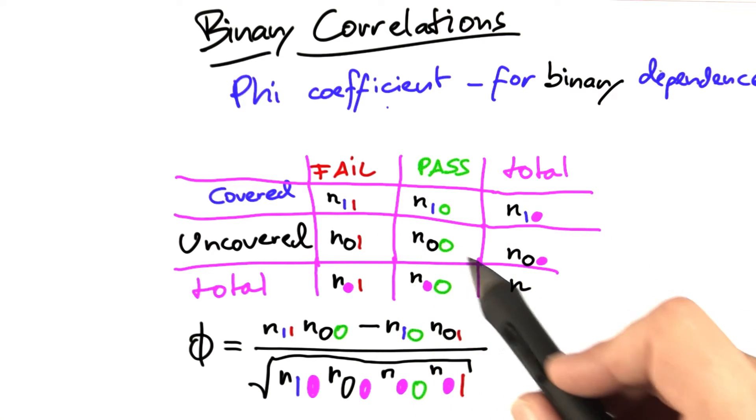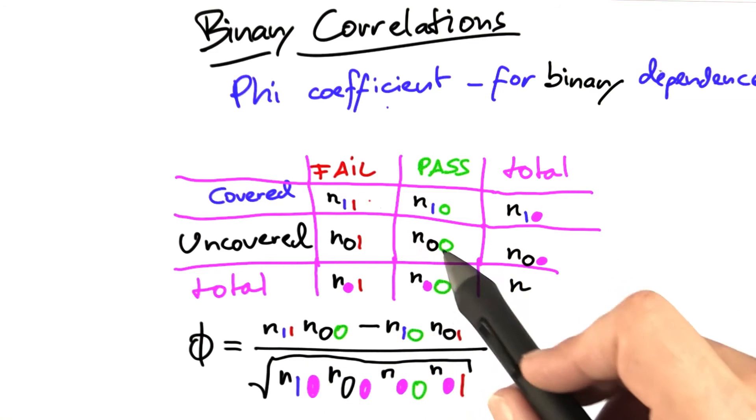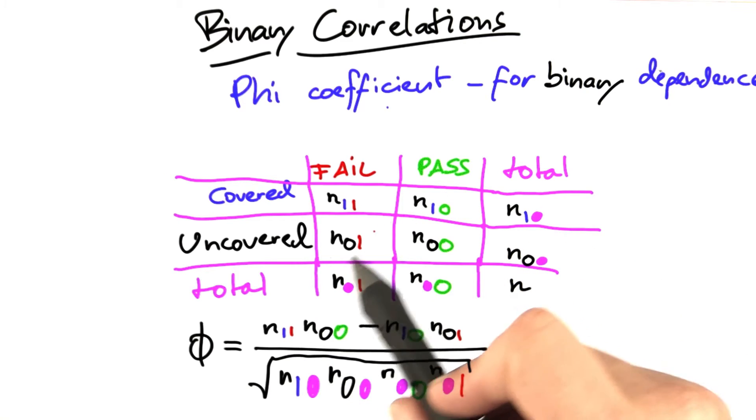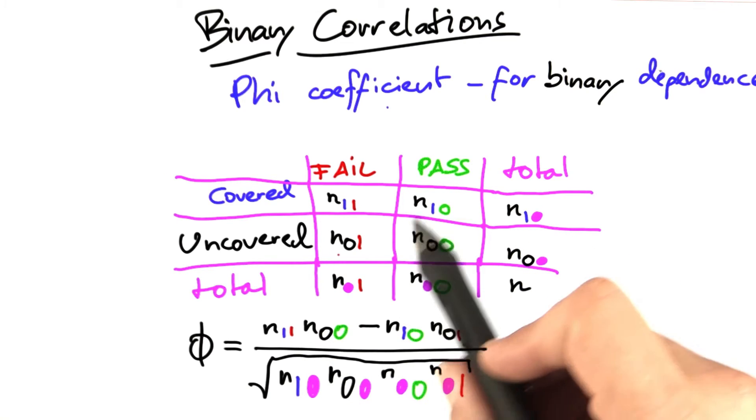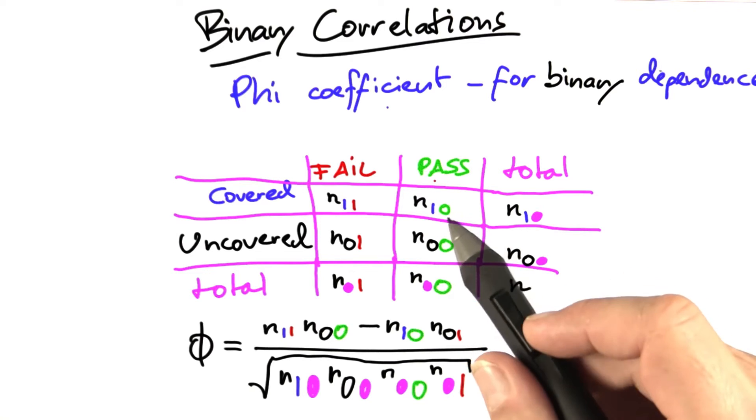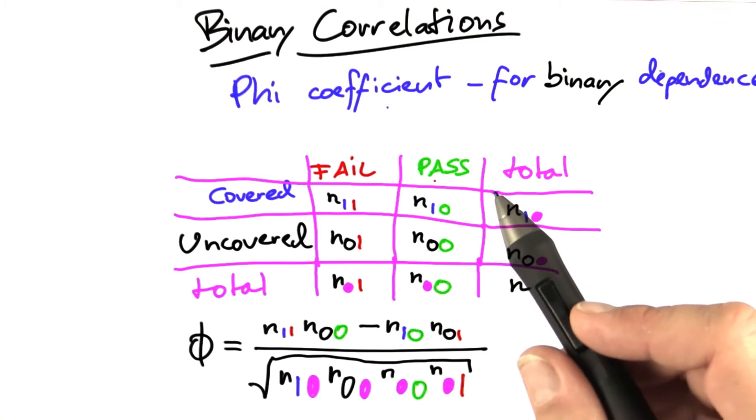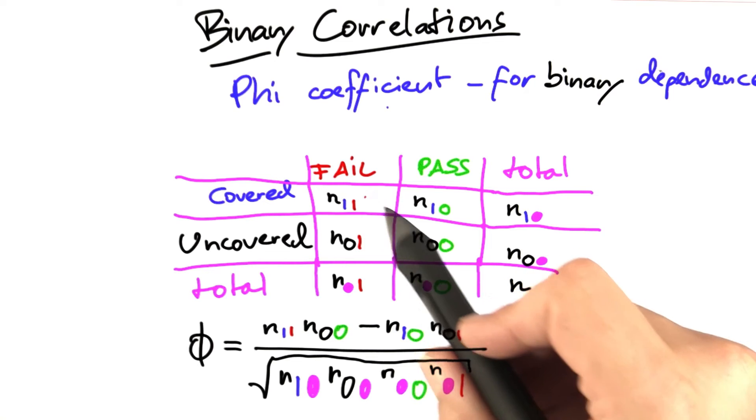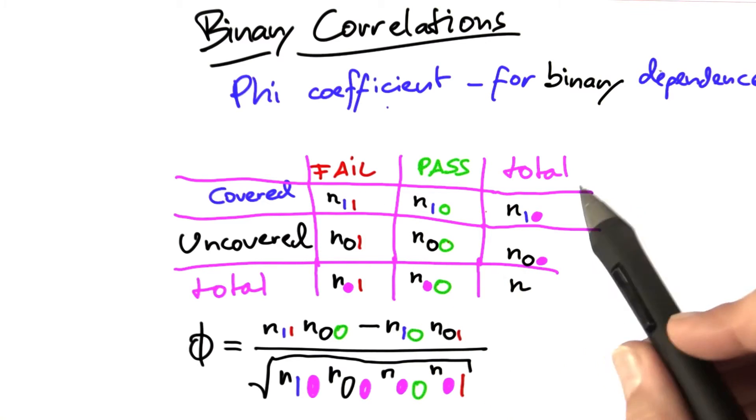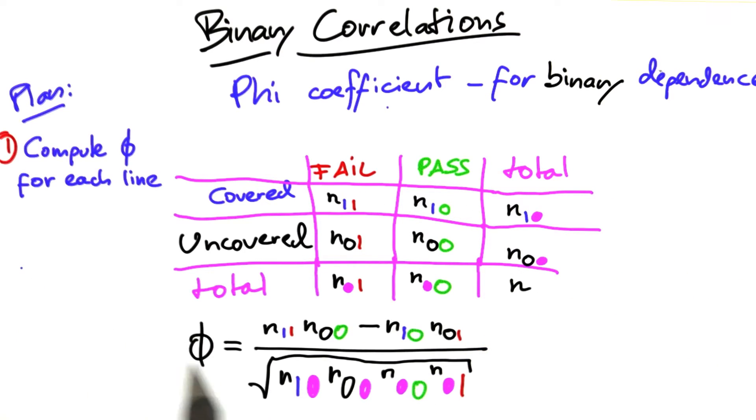If it's this diagonal, which has a high value, that's down here, then it becomes positive. If it's this diagonal, which has a high value, then it becomes negative. So, the higher the value in one diagonal, and the lower the value in the other diagonal, the stronger the correlation.